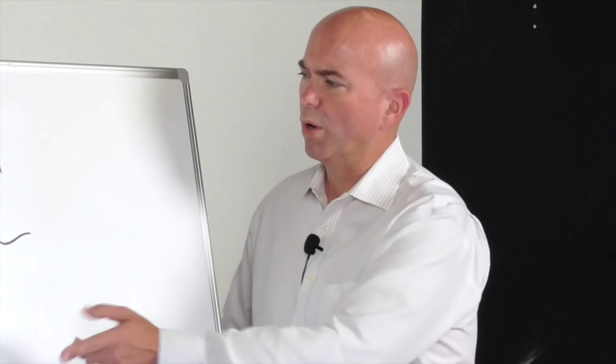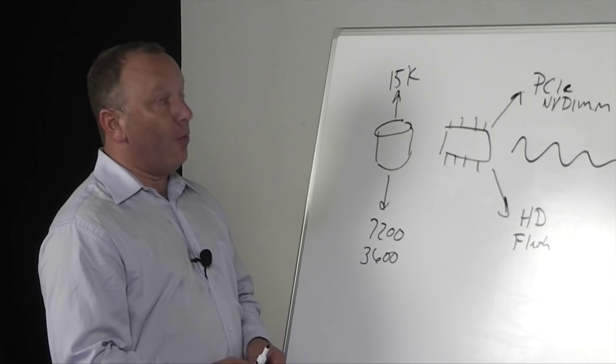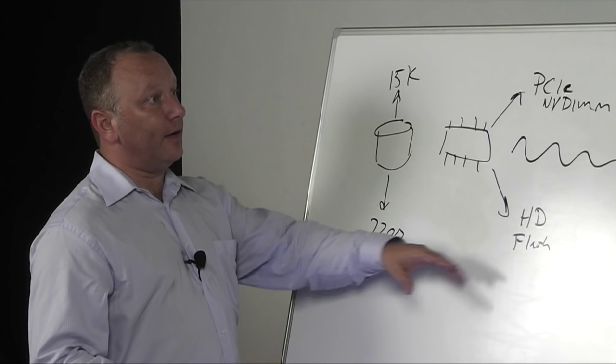So one other question on this. What's the physical footprint of it in that one petabyte system? That one petabyte system uses 2U of controllers and 3U of capacity. So 5U, you get a petabyte raw. That's impressive.